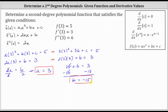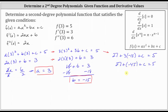Now that we know b equals negative 15, we substitute negative 15 for b in the first equation and solve for c. Three times the square of three is 27, so we have 27 plus three times negative 15, plus c equals five. This gives us 27 plus negative 45 plus c equals five. Since 27 plus negative 45 is negative 18, adding 18 to both sides gives us c equals 23.